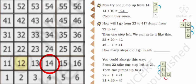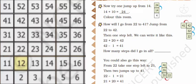Now how will you go from 22 to 41? Jump from 22 to 42. You have to go from 22 to 41. What is the easy method? Yes, you can jump just one step up, that means 22 to 32, then again one step up you will reach to 42.